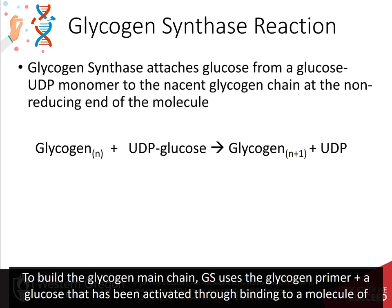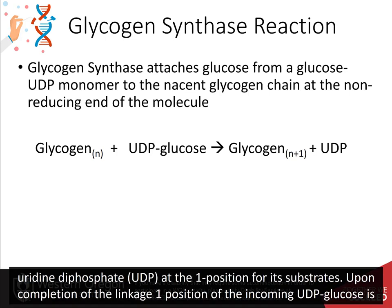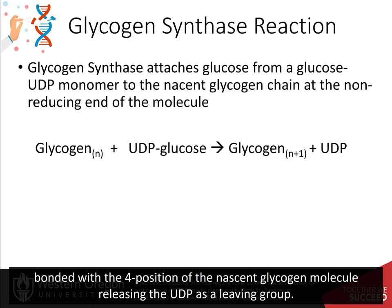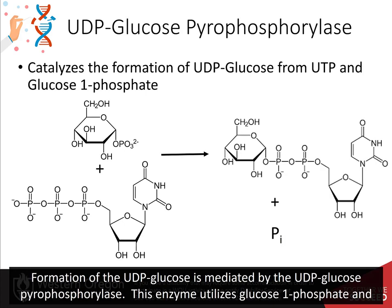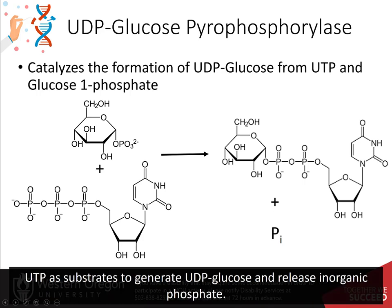To build the glycogen main chain, glycogen synthase uses the glycogen primer plus a glucose that has been activated through binding to a molecule of uridine diphosphate, UDP, at the 1 position for its substrates. Upon completion of the linkage, the 1 position of the incoming UDP glucose is bonded with the 4 position of the nascent glycogen molecule, releasing the UDP as a leaving group. The formation of the UDP glucose is mediated by the UDP glucose pyrophosphorylase. This enzyme utilizes glucose-1-phosphate and uridine triphosphate as substrates to generate UDP glucose and release inorganic phosphate.